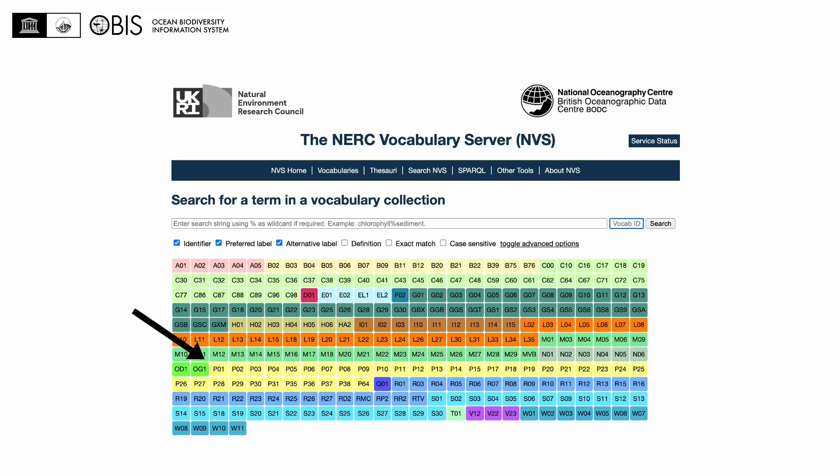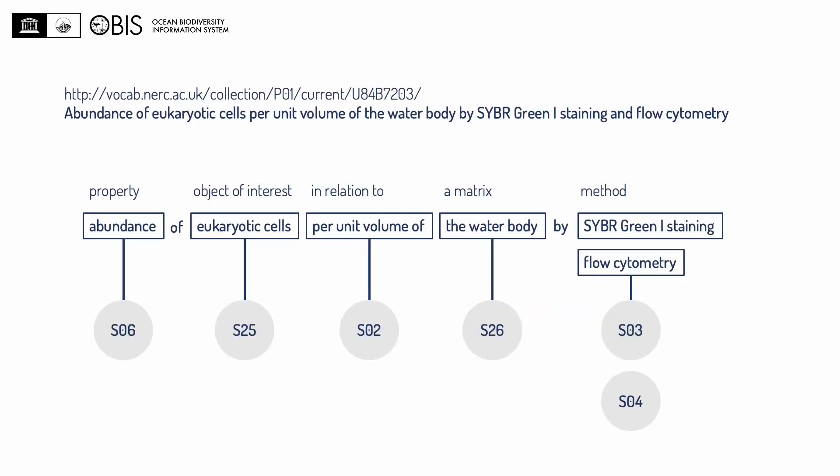For measurements, we rely quite heavily on the NERC vocabulary server, and in particular on the P01, or Parameter Usage Vocabulary. The interesting thing about this vocabulary is that it is backed by a semantic model. The measurement type we saw on one of the previous slides — abundance of eukaryotic cells per unit volume of the water body by SYBR green staining and flow cytometry — can be decomposed into elements from other vocabularies on the NERC vocabulary server. This makes it possible for users, but also for machines, to determine exactly what a specific measurement type means and how different measurement types relate to one another.